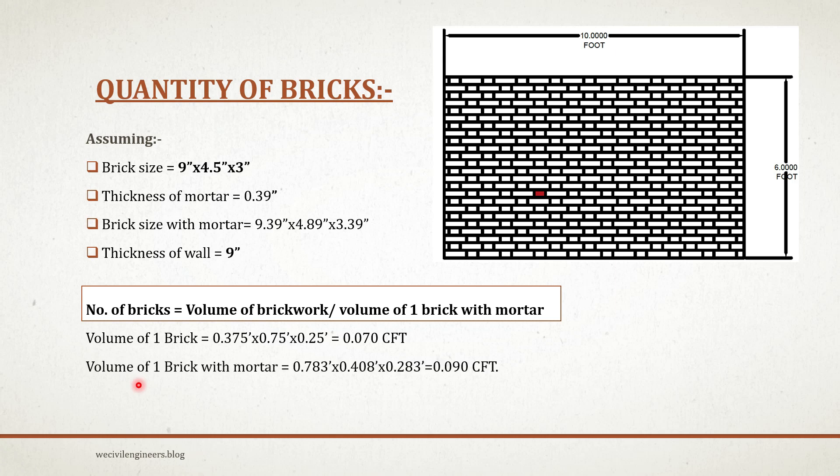Similarly, volume of one brick with mortar equals 0.783 - that is 9.39 divided by 12, which is 0.783 - multiplied by 4.89 divided by 12, which is 0.408, multiplied by 3.39 inches divided by 12, which is 0.283 feet. If you multiply these three values, you get 0.090 cubic feet.